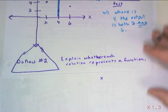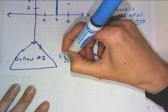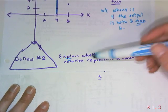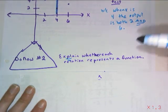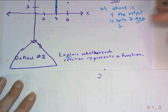So you go ahead and do the same thing on your own. Do now number two, put a big old triangle around it. And I want you to explain, so yes in words, whether each relation represents a function. And if it doesn't represent a function, tell us who is causing the problem. What is the greedy x?